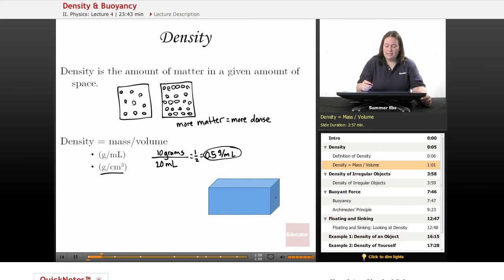If we were to measure the density of this blue box, we would need to know how to find the volume. For any rectangular box, you do length times width times height. Let's say the length is 10, the height is 5, and the width is 4. So 10 times 5 times 4 gives you volume.